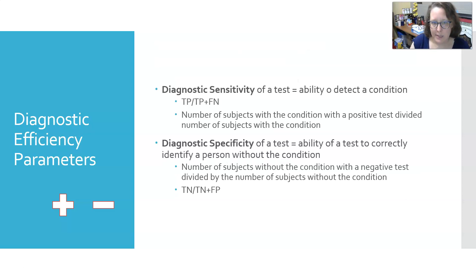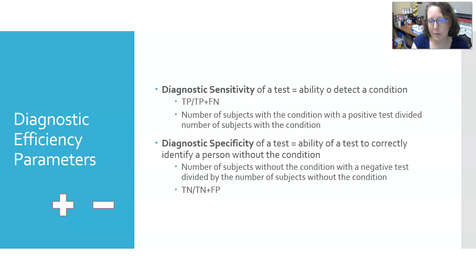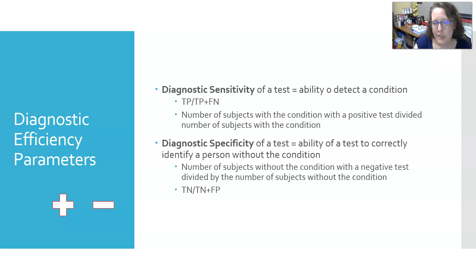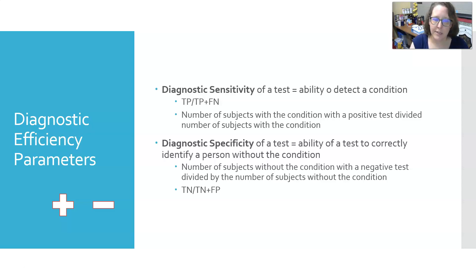The diagnostic sensitivity of a test is the ability to detect a condition. It is the true positives divided by true positives plus false negatives — or the number of subjects with the condition who have a positive test divided by the total number of subjects with the condition. The diagnostic specificity is the ability of a test to correctly identify a person without the condition — the number of subjects without the condition with a negative test divided by the total number of subjects without the condition.